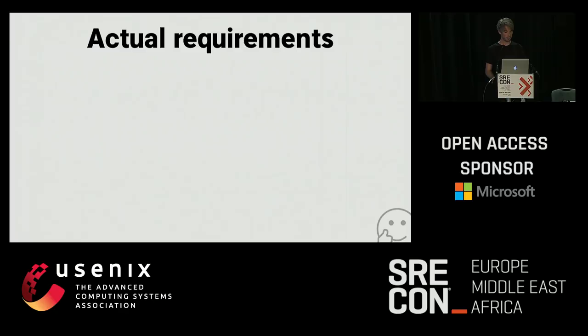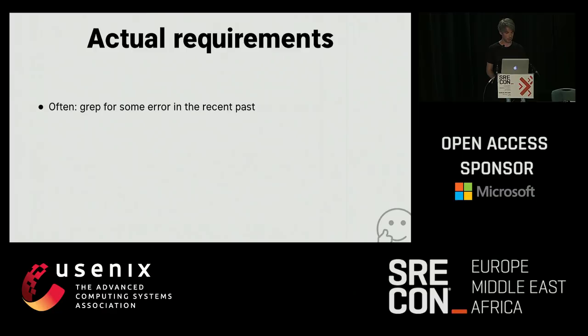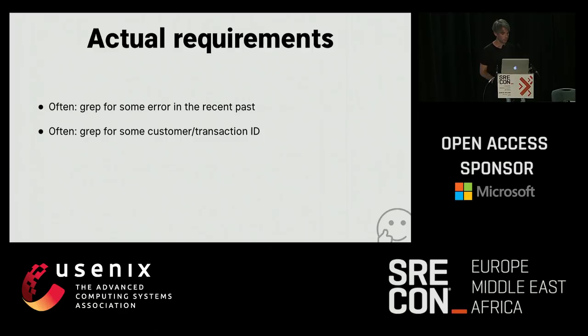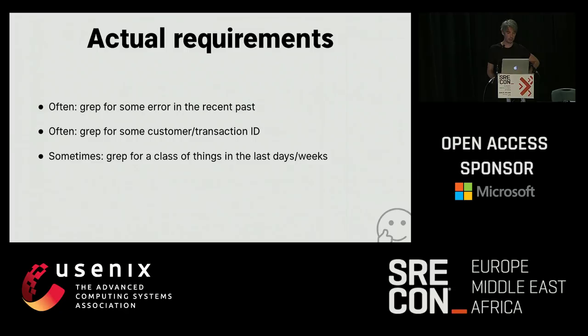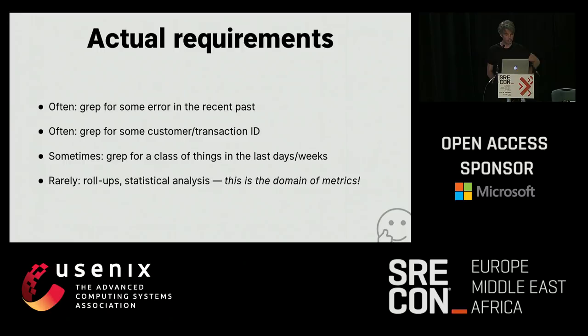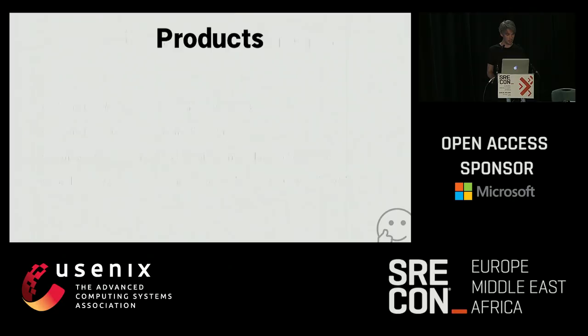Let's think about what our actual requirements are for a well-scoped logging system. Most often when I use logging systems, I want to grep for some error or specific problem in the recent past — recent being on the order of hours, sometimes days, rarely weeks. Often I'll also grep for a customer or transaction ID, maybe something I want to dig deeper into because someone's reported something. Sometimes I want to do pattern matching over the last days or weeks. Very rarely do I personally do rollups or statistical analysis, because I have a metrics system sitting in parallel doing that work.